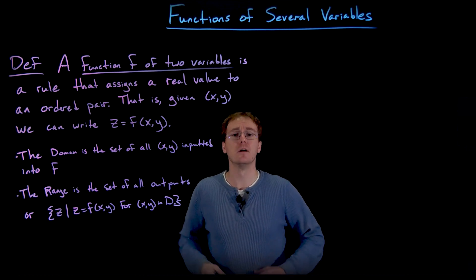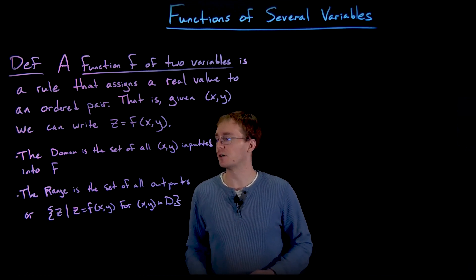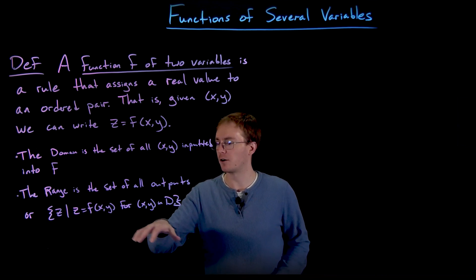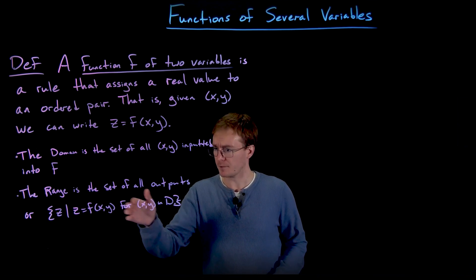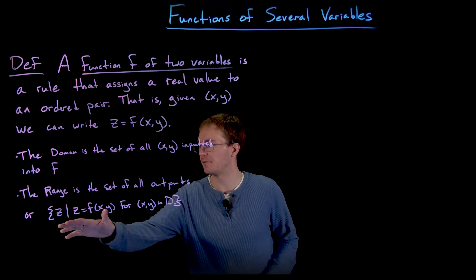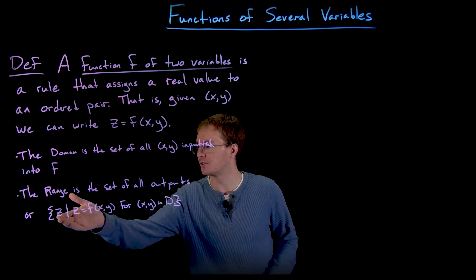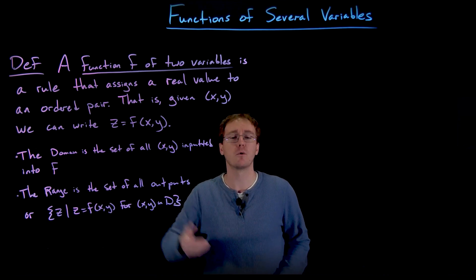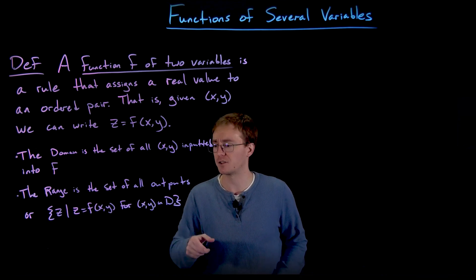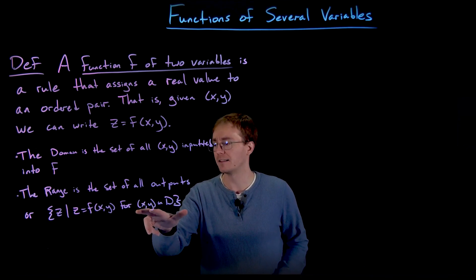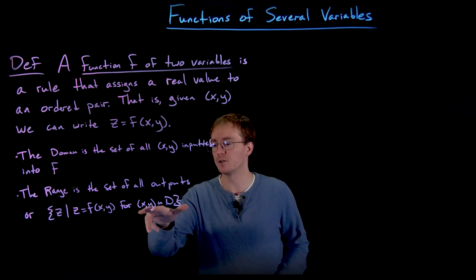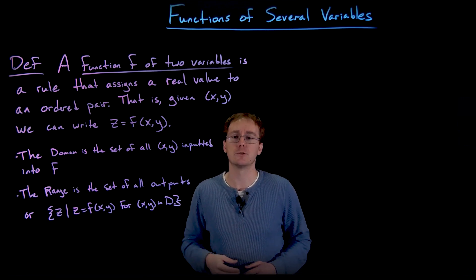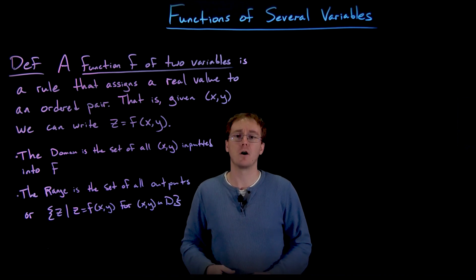The range is still the set of all outputs, and that's still going to be a single number — our z values. In formal set notation, the range of our function is the set of all z values such that z equals f(x, y), for each ordered pair x comma y in the domain D.